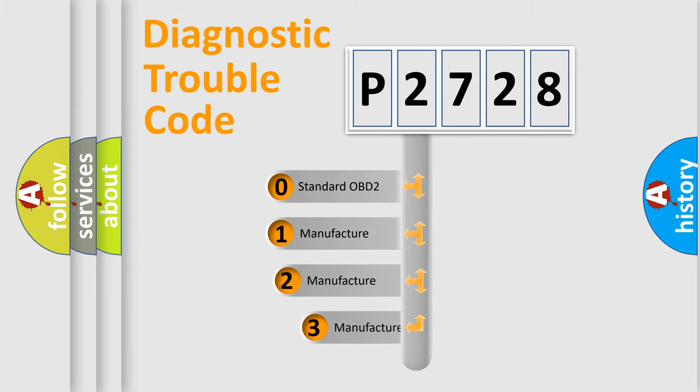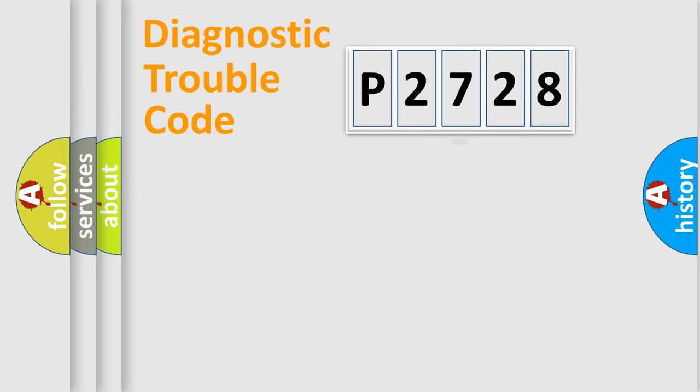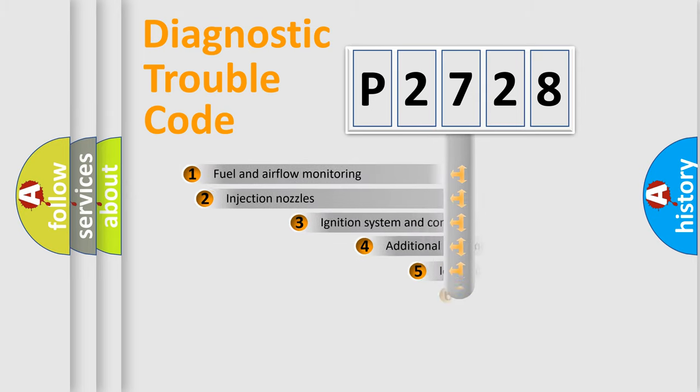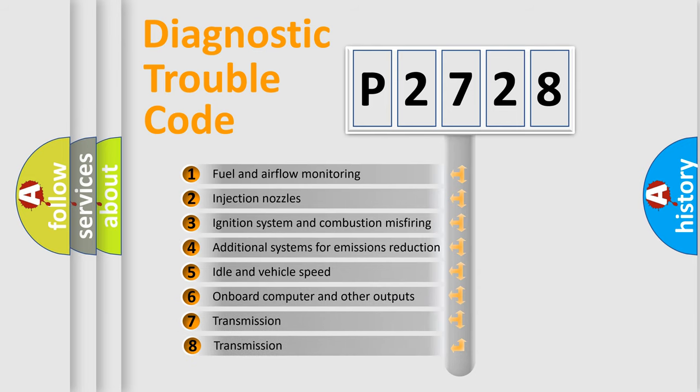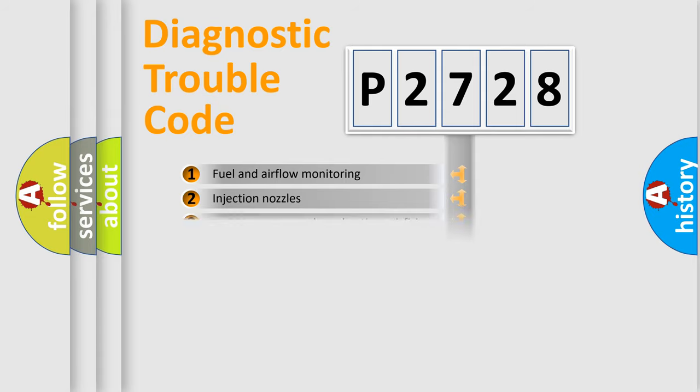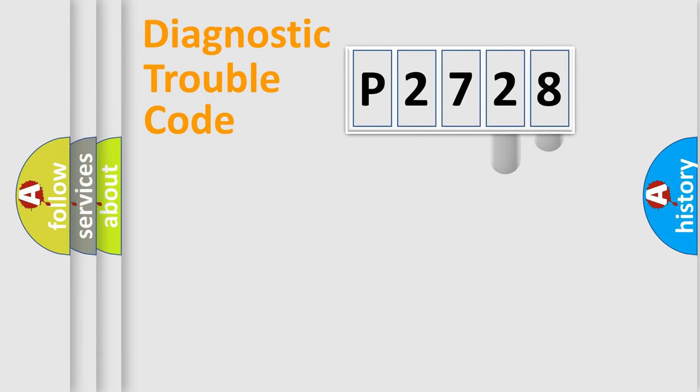If the second character is expressed as zero, it is a standardized error. In the case of numbers 1, 2, or 3, it is a more specific expression of a car-specific error. The third character specifies a subset of errors. The distribution shown is valid only for standardized DTC codes.